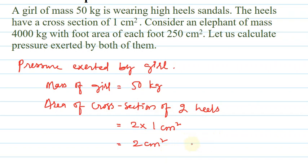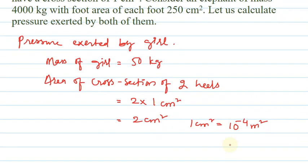Let us convert this centimeter square into meter square. We know that 1 centimeter square equals 10 to the power of minus 4 meter square. This is because 1 centimeter is 1 by 100 of a meter, so 1 centimeter square is 1 by 100 into 1 by 100 meter square, which equals 1 by 10,000 — that is 10 to the power of minus 4 meter square.